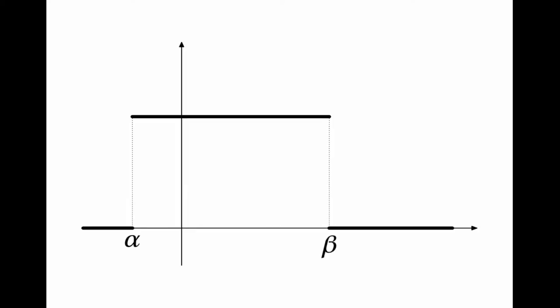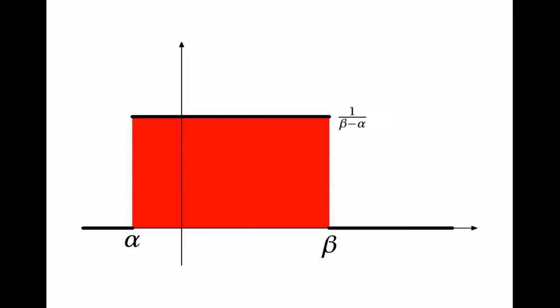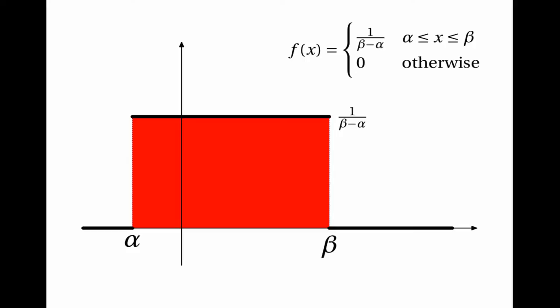Let's look at the graph again. It's normal to say that the minimum possible value of the random variable is alpha, and the maximum possible value is beta. We can work out the probability density function by remembering that the total area under the graph must be 1. The width of this rectangle is beta minus alpha, so if the total area is going to be 1, the height must be 1 over beta minus alpha. Therefore the probability density function is 1 over beta minus alpha when x is between alpha and beta, and 0 otherwise.